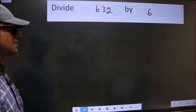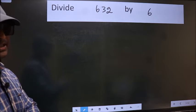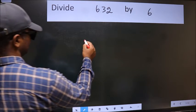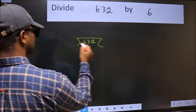Divide 632 by 6. To do this division, we should frame it in this way. 632 here and 6 here.